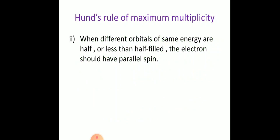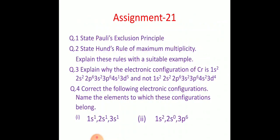The second statement of Hund's Rule: when different orbitals of the same energy are half or less than half filled, the electrons should have parallel spin. For example, the p orbital is half filled at three electrons, so if there are fewer than three electrons, they should all have parallel spin — either all clockwise (+½, +½) or all anticlockwise.